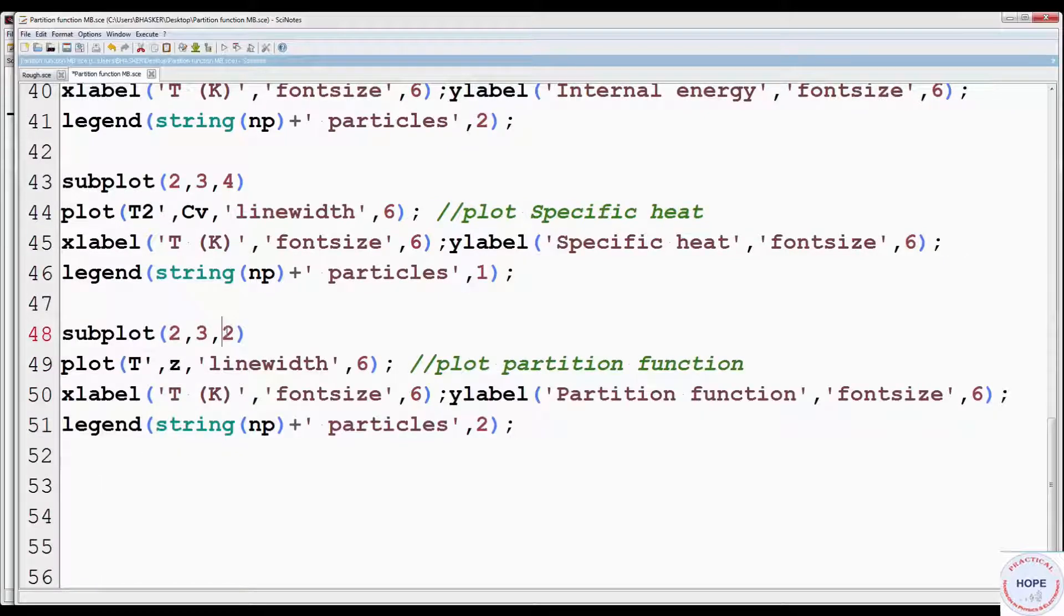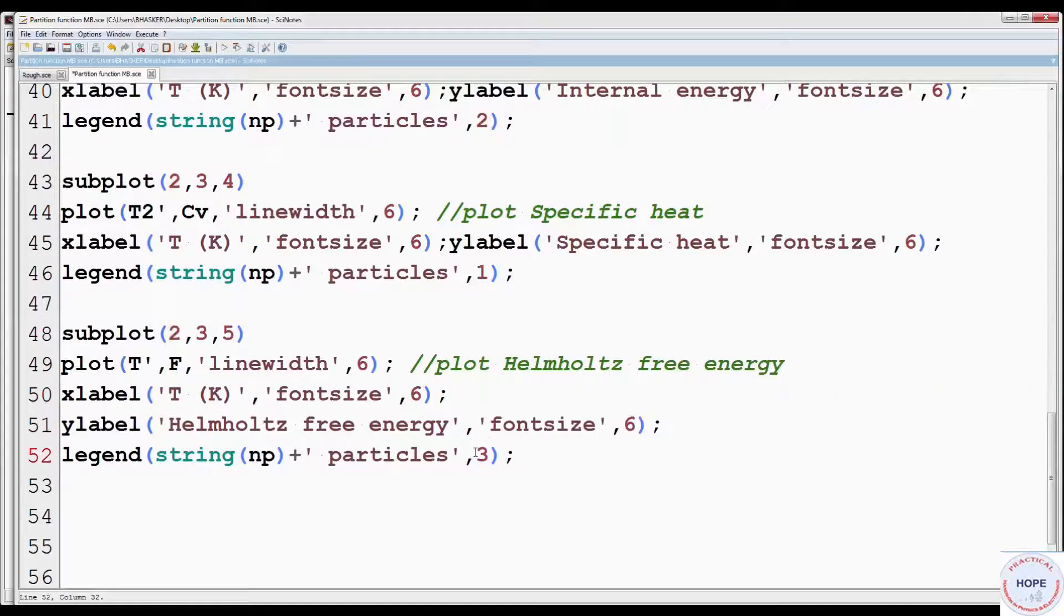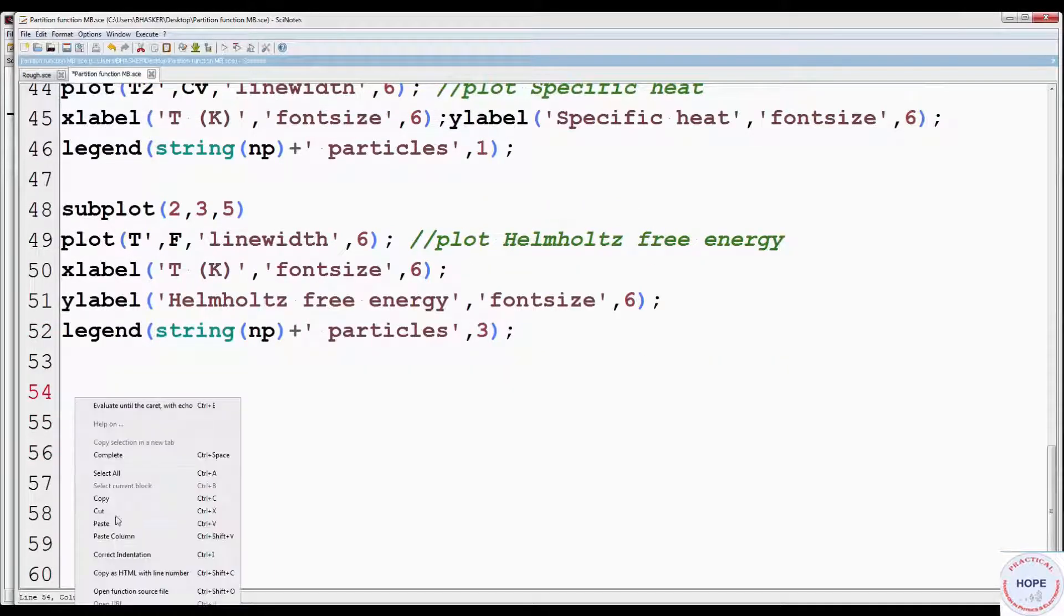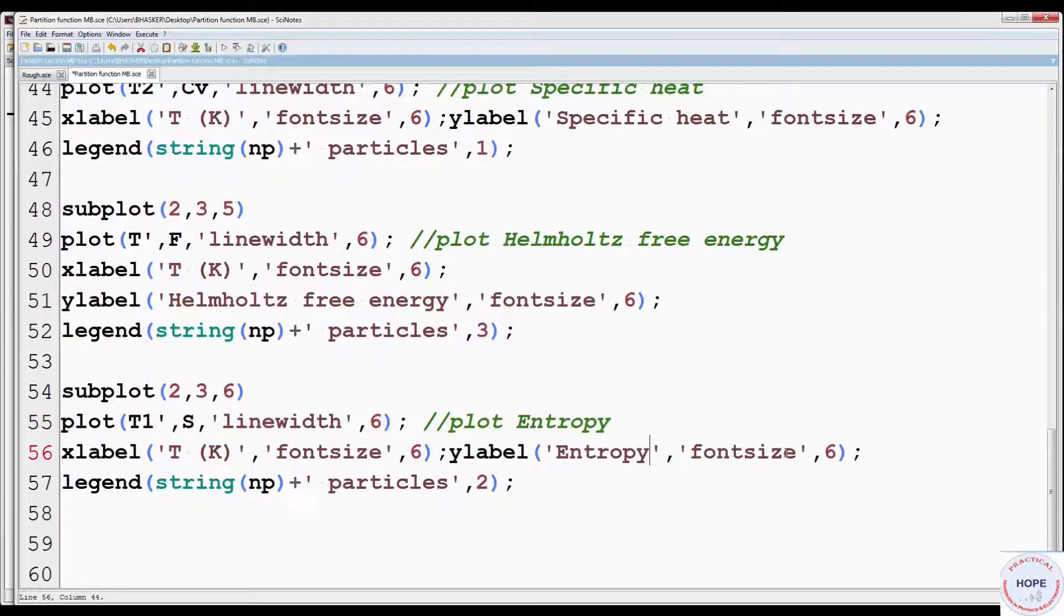Paste again. Change plot position to 5. Instead of Z write F for Helmholtz free energy. Change Y label appropriately. Change the position of the legend to 3. Again paste. Change plot position to 6. Instead of T we have to plot T1. Instead of Z write S for entropy. Change Y label. So our program is finished.